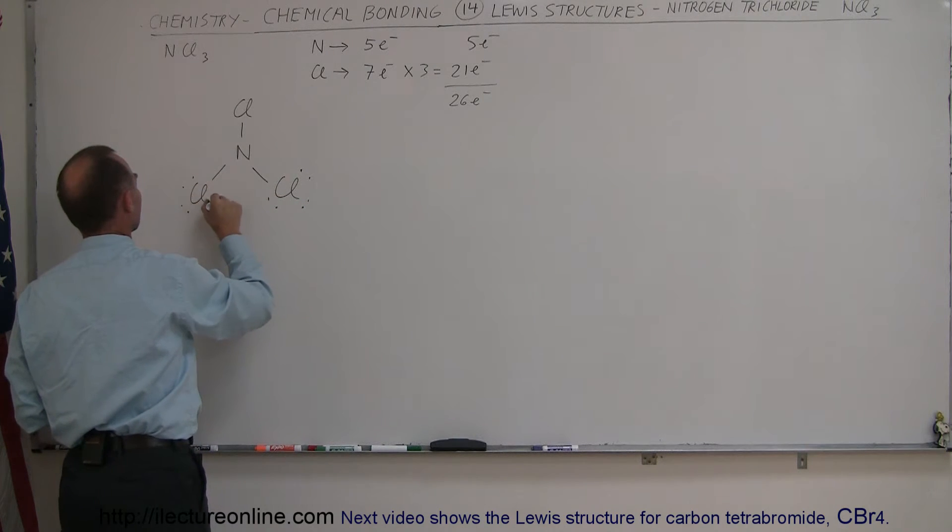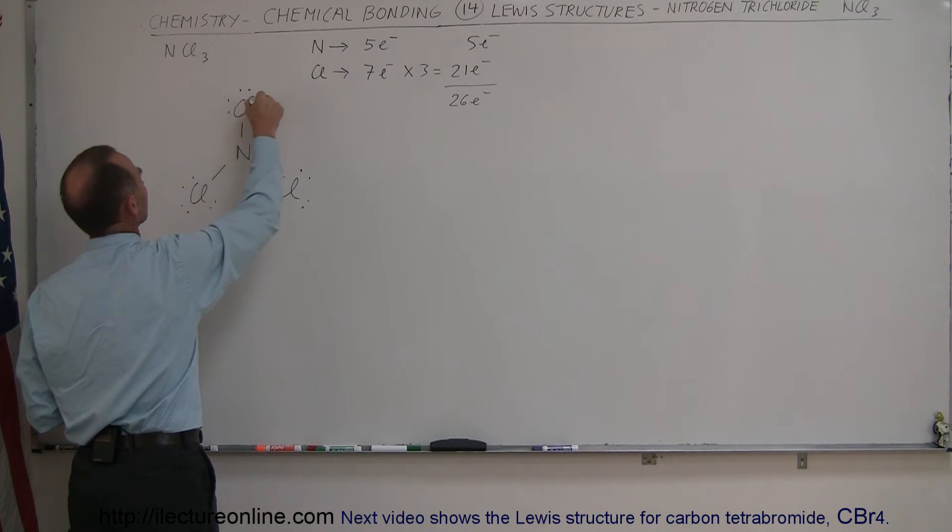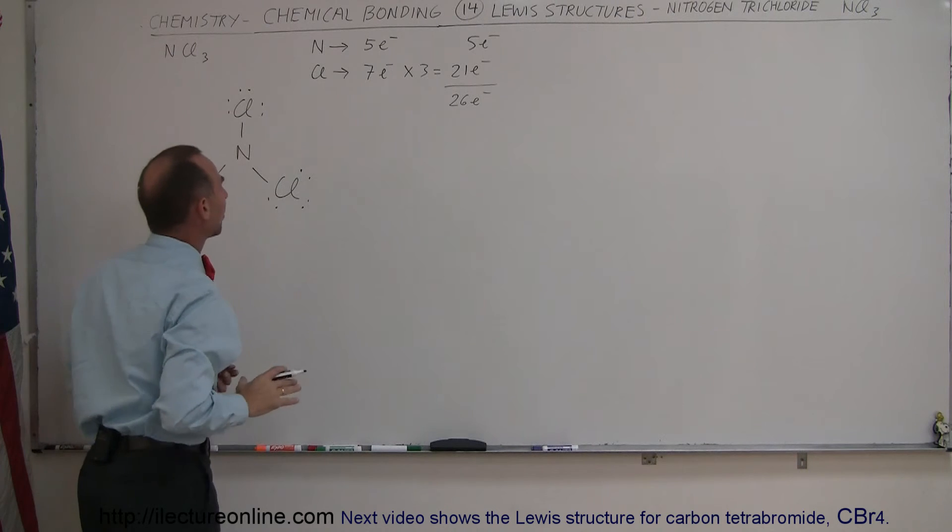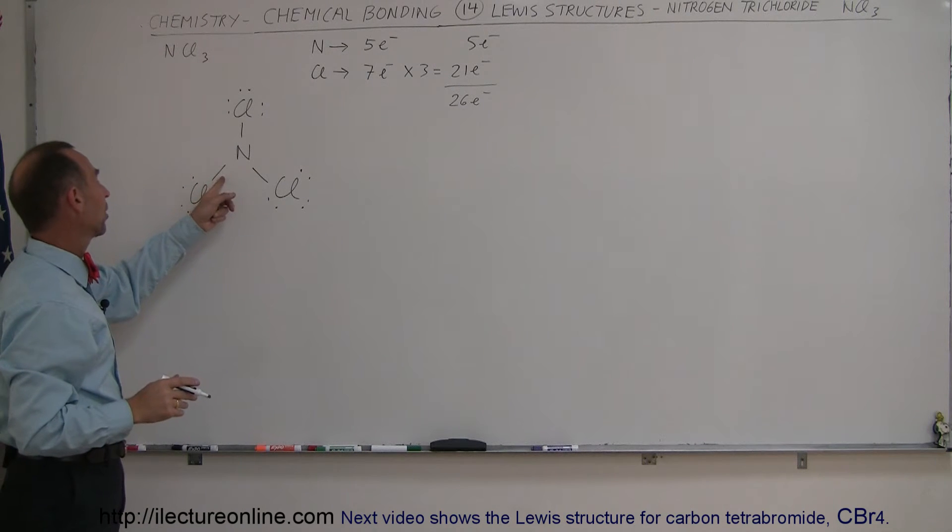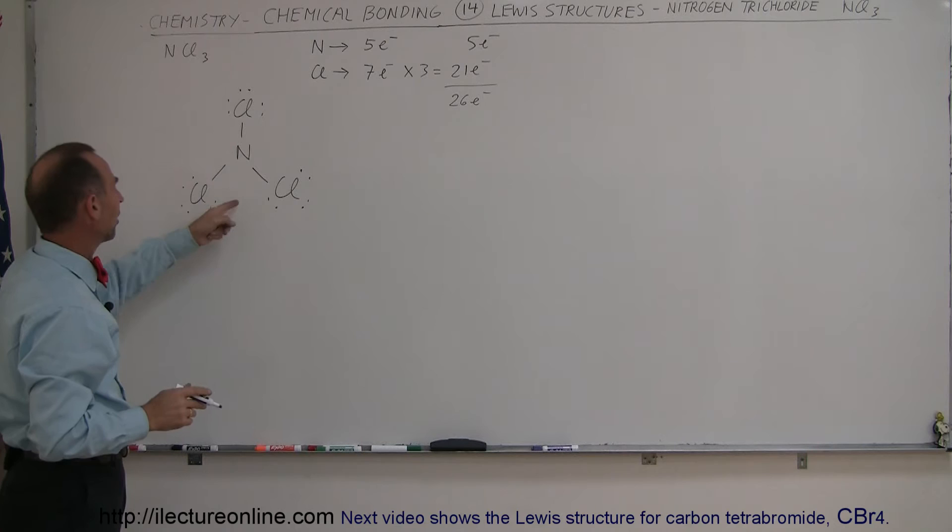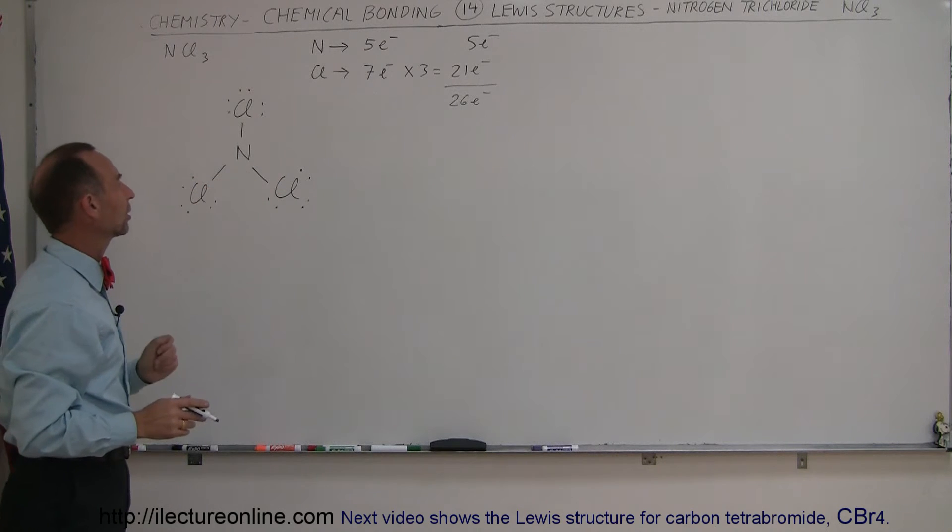around this chlorine, we have another set of six over here, like so, and another set of six over here. So the chlorine atoms look like they're satisfied. Two to share, and six additional ones gives them part of time eight electrons each, so they look like they're in pretty good shape.